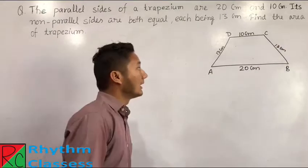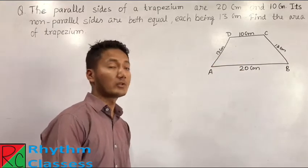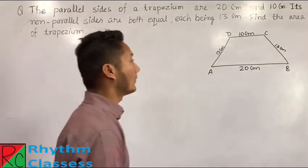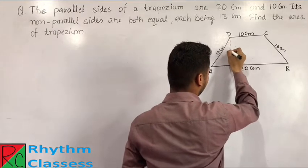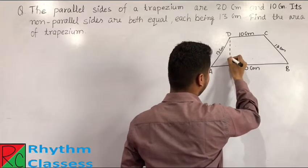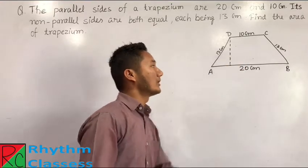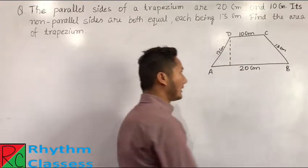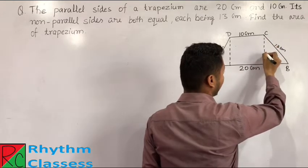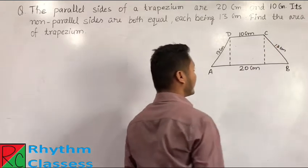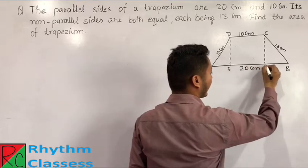To find the area of this trapezium, first of all we draw a perpendicular height. We draw one perpendicular height here, and one more perpendicular height here. We name these points E and F.